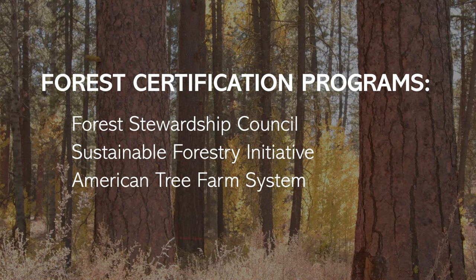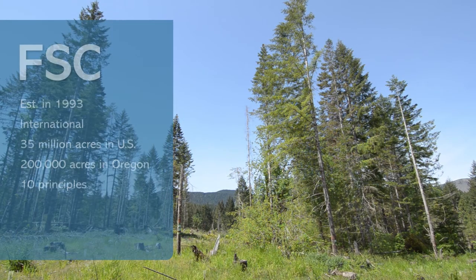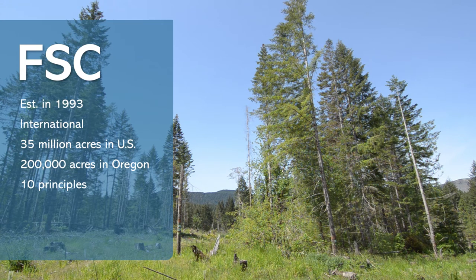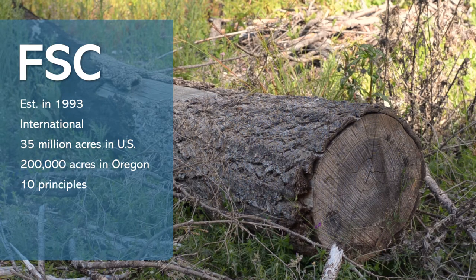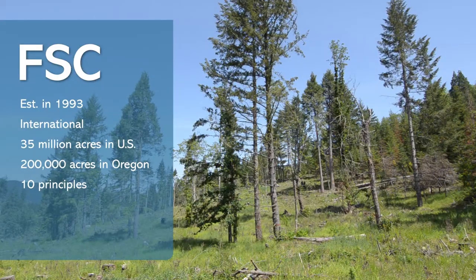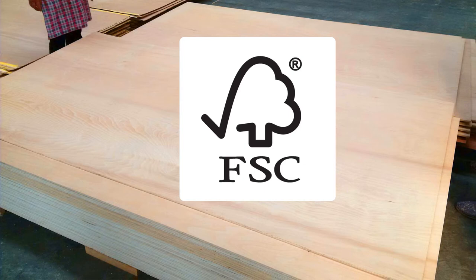In addition to following all applicable forest regulations, many landowners want to demonstrate their commitment to sustainability by participating in a forest certification program. In the U.S., there are three main forest certification systems: the Forest Stewardship Council, the Sustainable Forestry Initiative, and the American Tree Farm System. The Forest Stewardship Council, or FSC, was established in 1993 and is used worldwide. It currently certifies about 35 million acres in the U.S. and less than 200,000 acres in Oregon. FSC has 10 Sustainable Forestry Principles and is characterized by small timber harvest unit size, retention of some mature forest plants during harvesting, and minimizing use of forest chemicals. FSC has a label that can be stamped on products such as lumber or on packaging.